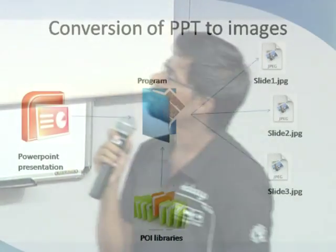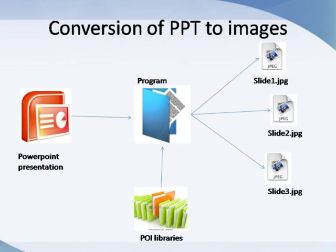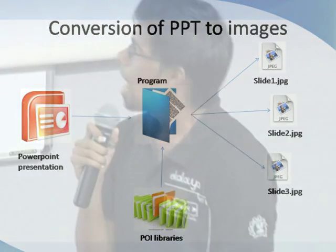This is how the conversion of PPT to images takes place directly. You can select the PowerPoint presentation, and the program processes it with the help of the POI library — that is, Poor Obfuscation Implementation Library. It is a project by Apache. Each slide of the presentation is then converted into images.